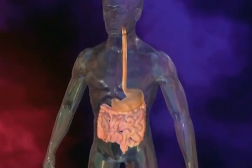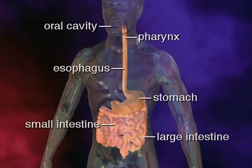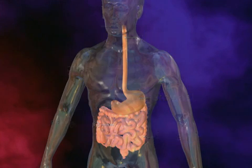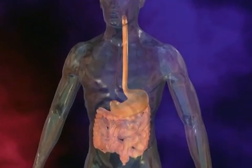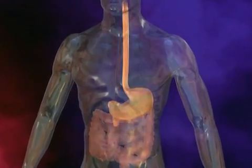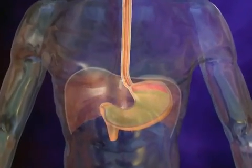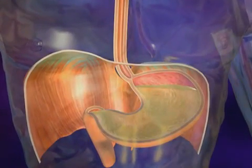The gastrointestinal, or GI tract, includes the oral cavity, pharynx, esophagus, stomach, and the small and large intestine. The GI tract is part of the digestive system and is responsible for moving food and liquid into and out of the body.